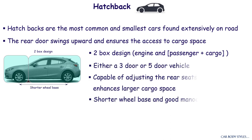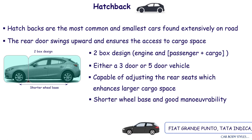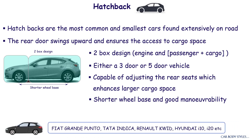Hatchbacks may be either a three-door car with one row of seats, or a five-door car with two rows of seats. The rear seats in these vehicles can often be folded, thus increasing the area at the rear region and ensuring larger cargo space. The wheelbase for these kinds of cars is smaller. Common examples of hatchback cars are Fiat Grand Punto, Alto 800, Tata Indica, Renault Kwid, and so on.